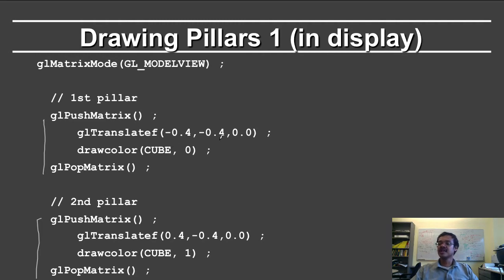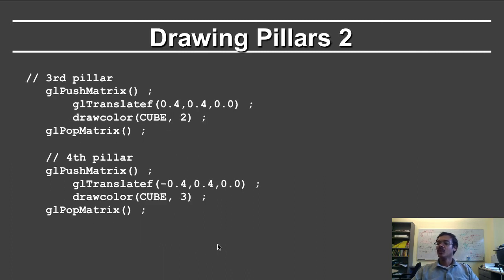Here you translate to a particular location on the screen. You draw this cube and the zero refers to a color — in this case it's red. Similarly, you go to the next color and the next location. We can also talk about the third and fourth pillars, again with different colors for the cube and different locations in the scene.